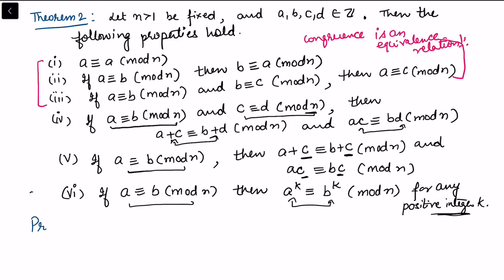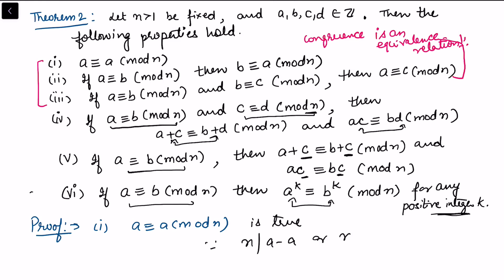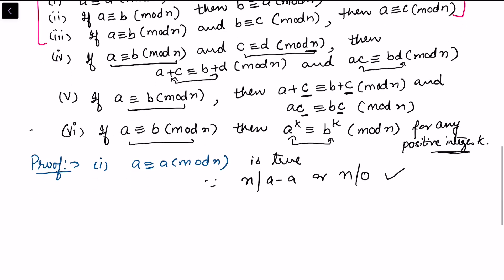Now let's prove properties one, two, and three to show congruence is an equivalence relation. For property one, a is congruent to a modulo n, which is true by definition itself, because n divides a minus a, or n divides 0. That is trivially true because every number divides 0.